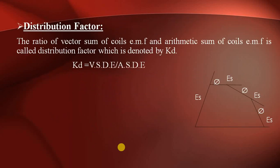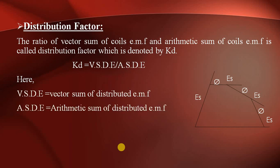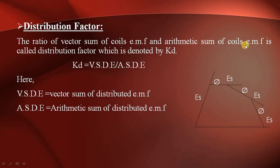The next factor is the distribution factor. Understanding both factors — pitch factor and distribution factor — is very important to understand the EMF equation of an alternator. The distribution factor is defined as the ratio of the vector sum of coil EMFs to the arithmetic sum of coil EMFs, and is denoted by Kd.